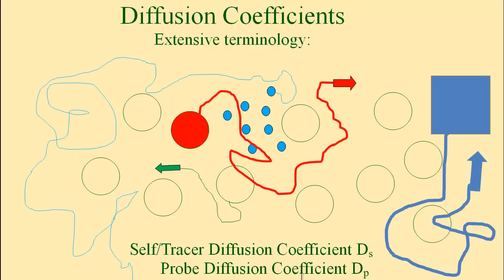There exists a second complete class of experiments in which we measure the motion of a single object through a polymeric matrix background. In this figure, the green circles represent the matrix background. We've tagged one of the green circles bright red, and we measure its motions — the red track — as it moves through the other green circles and the solvent. We call this experiment, where the tagged molecule is basically identical to the untagged molecules, a measurement of the self-diffusion coefficient, D_S.